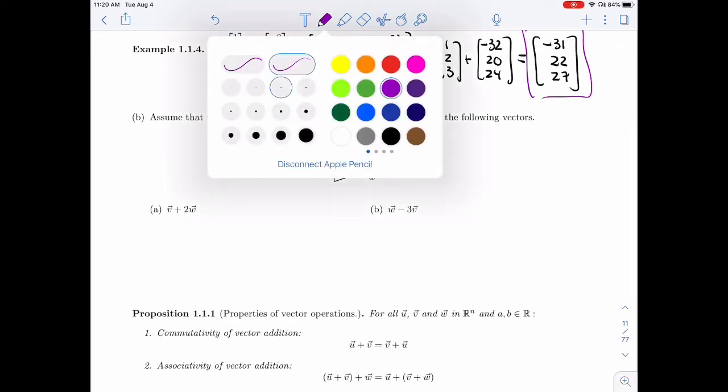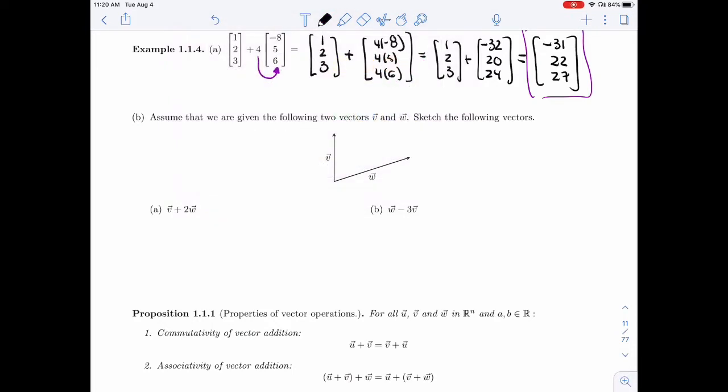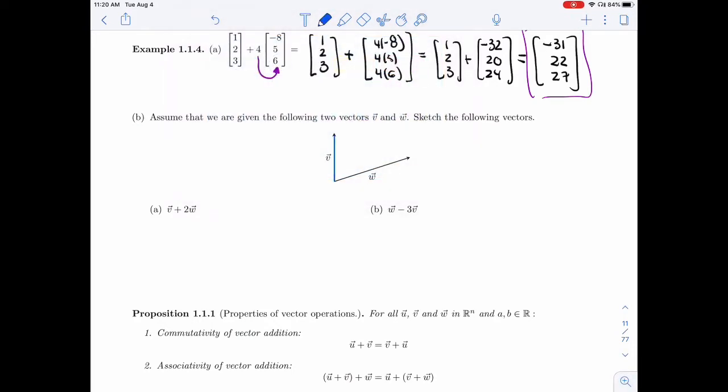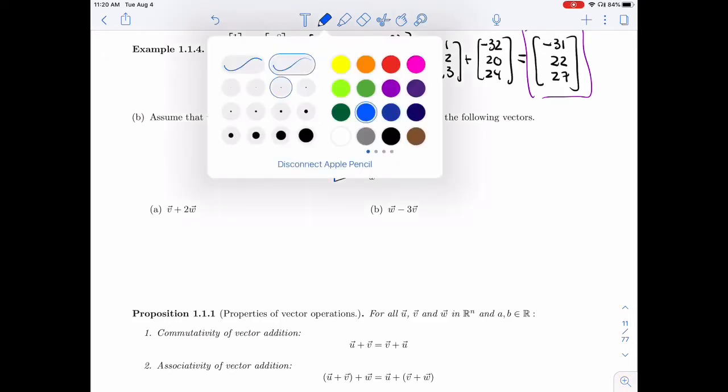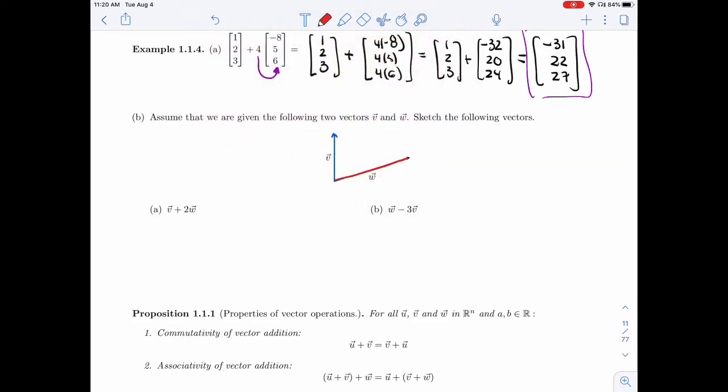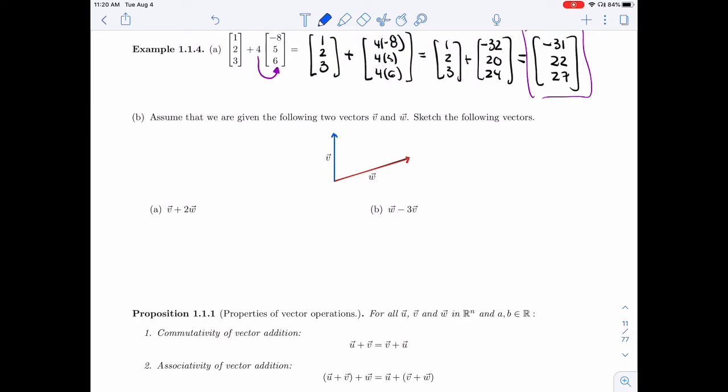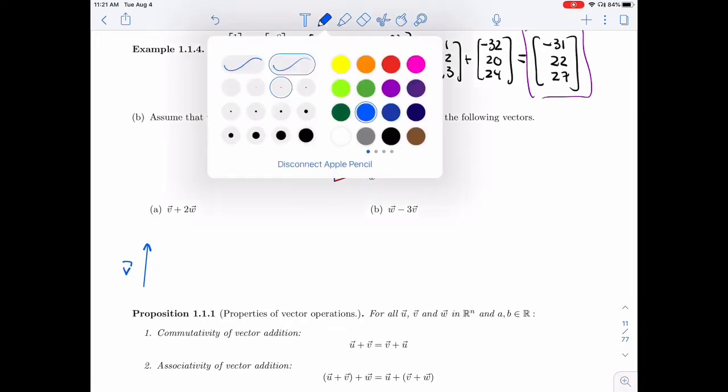So here I want V plus 2W. Let me give colors to these. I'm going to use blue for V, and I'm going to use red for W. So I want to do V first. V is going to be in blue. Let's start over here just to make sure I have enough room.